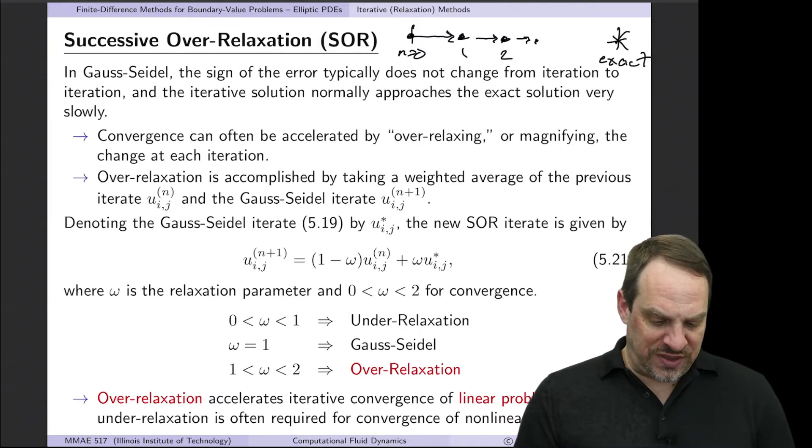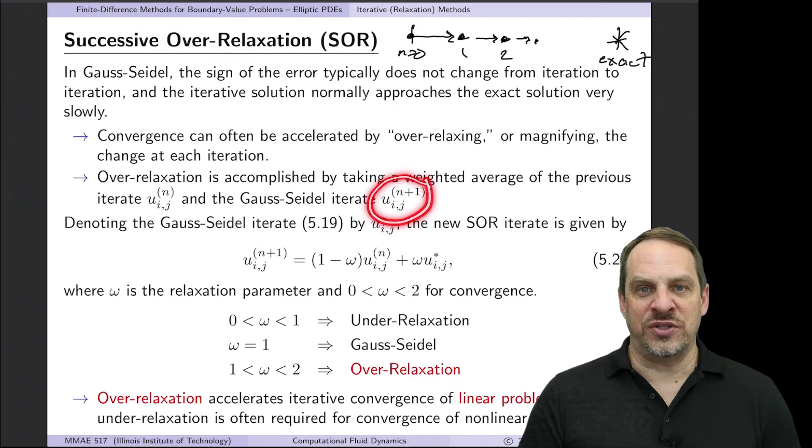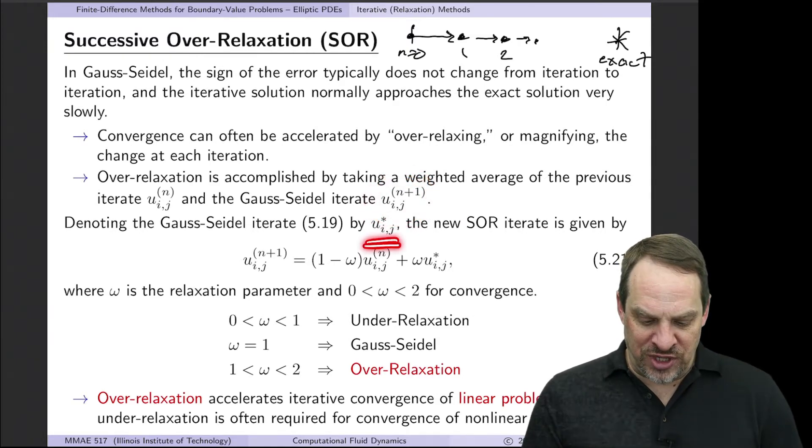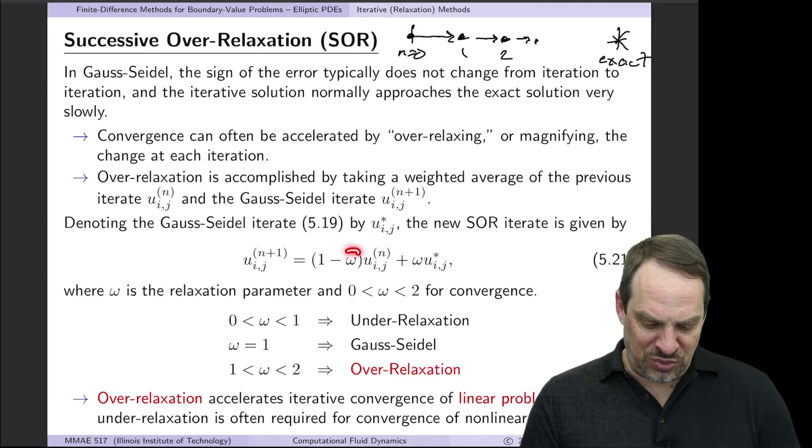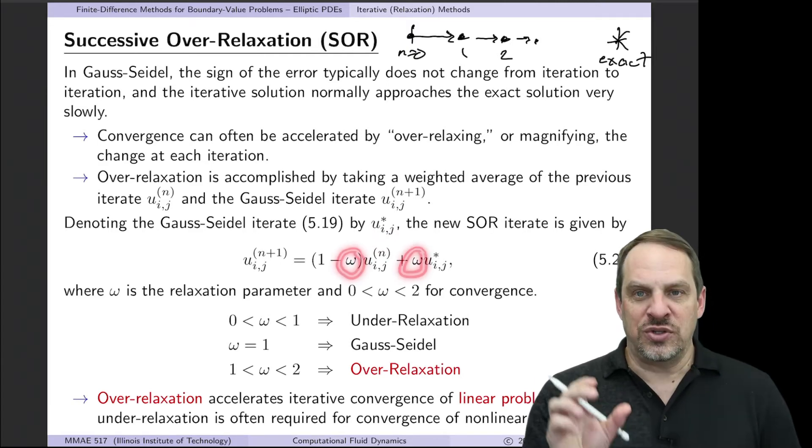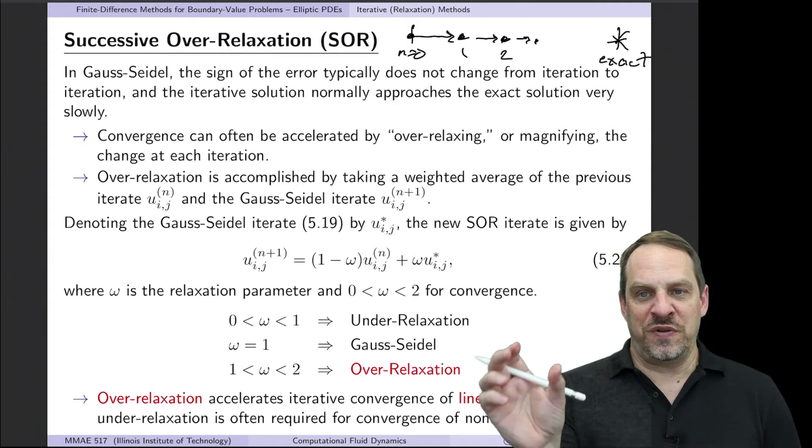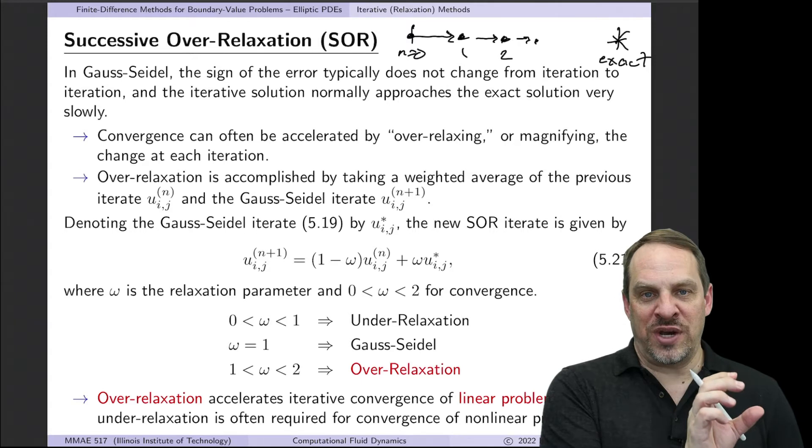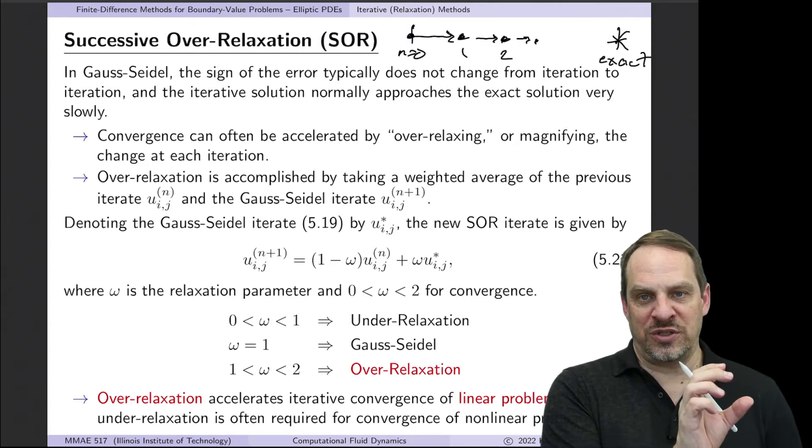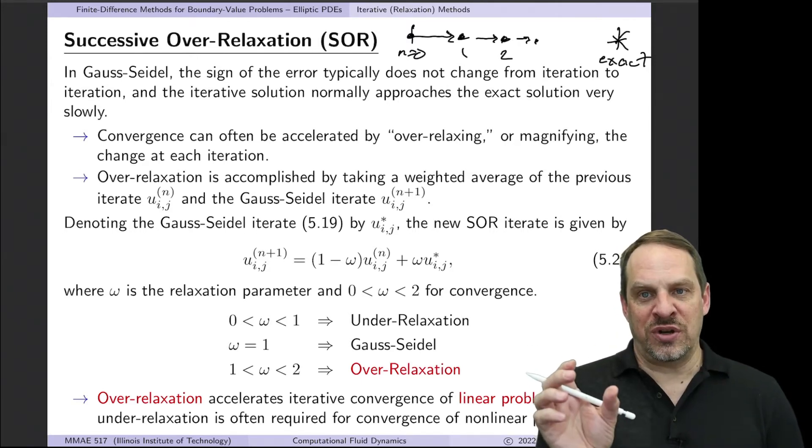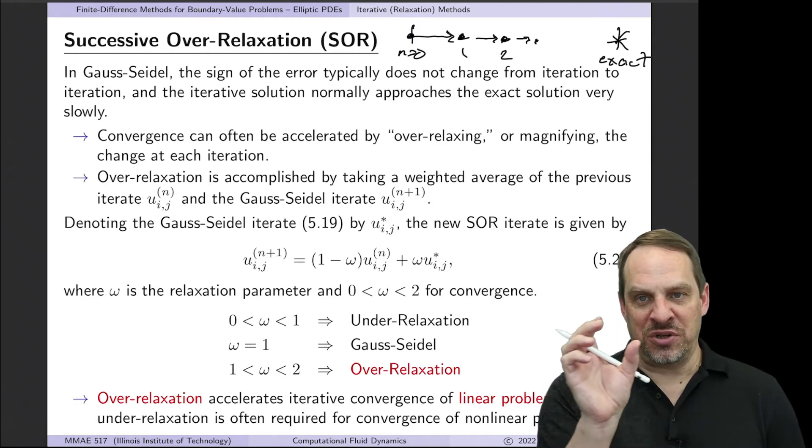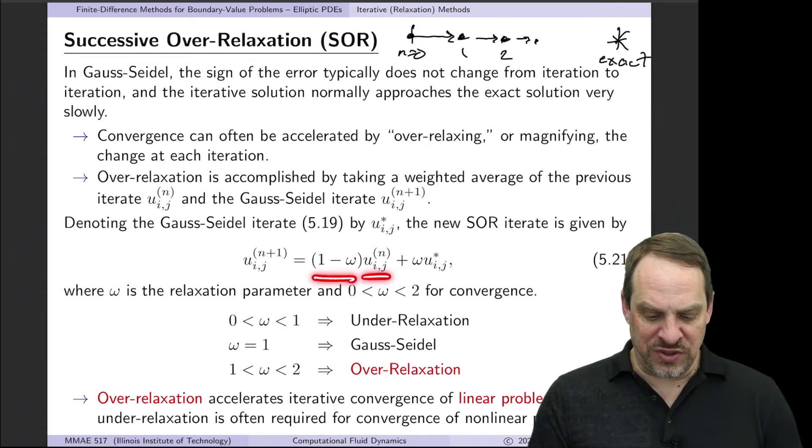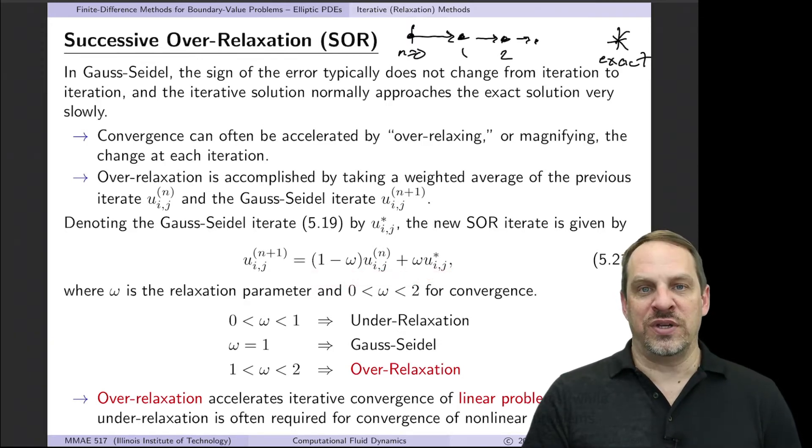So here's the basic idea. We get our Gauss-Seidel iterate, the u_ij^(n+1), as we did in the previous video. We'll call that u_ij star. We're going to use a relaxation parameter, omega here, to take a weighted average of the previous and the Gauss-Seidel approximation in order to get the u_ij^(n+1) approximation. So Gauss-Seidel would give us u_ij star. The SOR is going to be some linear combination of that along with the previous value, according to this, (1-omega) of previous and omega of the Gauss-Seidel.